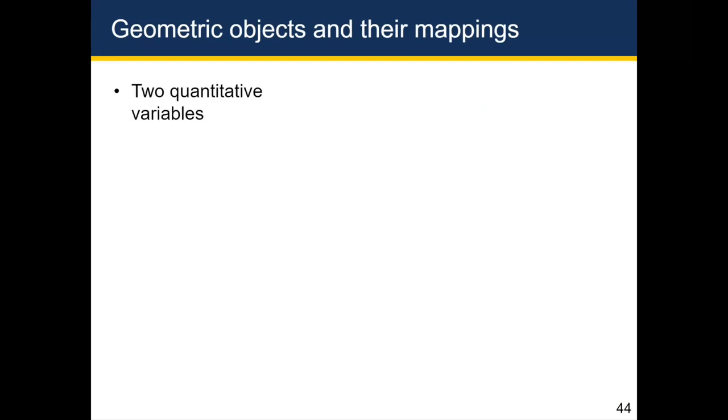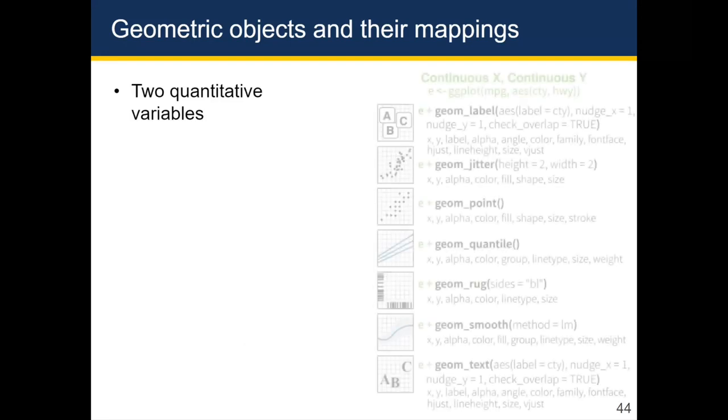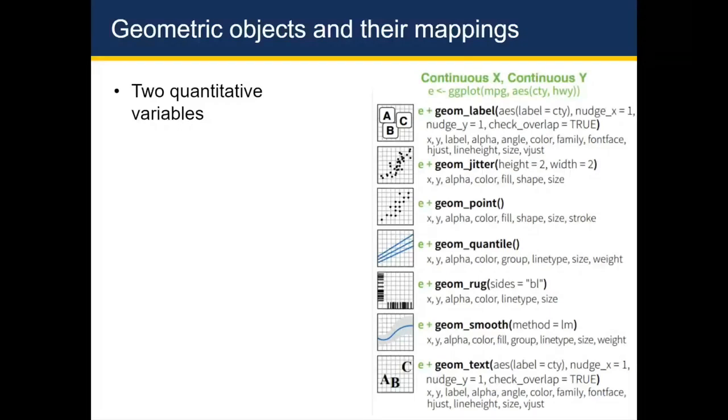If you're dealing with a situation where you have two quantitative variables, then the most common geom that we tend to use is geom_point. If you want the points to not overlap, so you want to randomly shift them, then you can either use geom_point with the argument position equals jitter in quotes inside of it, or you can just use a geom_jitter. You'll also recall that earlier we wanted to fit a smooth line, and so we used geom_smooth, which gave us that smooth line on top of our scatter plot.